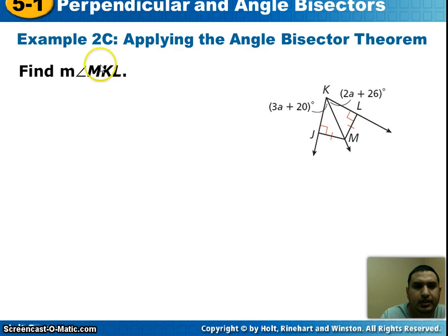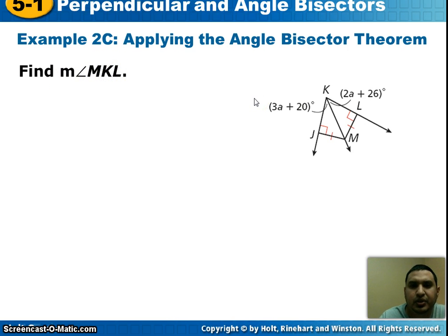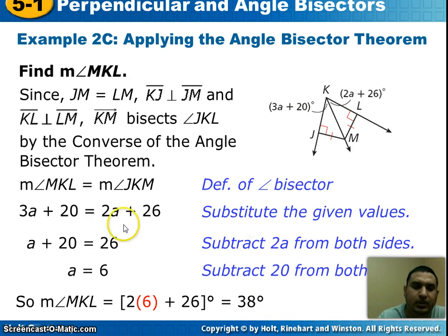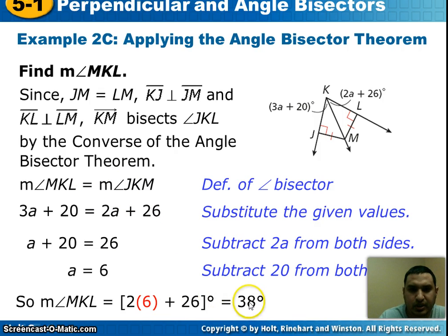Next example: find the measure of angle MKL. I'll leave this up to you to try — pause the video and then come back and check your answer. The answer you should have got is that the measure of angle MKL is 38 degrees. If you got it, great. If not, here are the steps to help explain why we got 38 degrees.